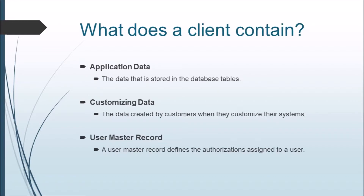A client contains application data, customized data, and user master data. Application data is the data which is stored in the database, that is transactional data. The customizing data is created by the customer when they want to customize their system according to their requirement — it represents the data for an organization and the parameters that control the business process. The user master record defines the authorizations assigned to the user.